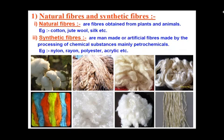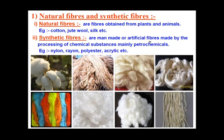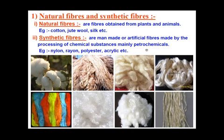In this chapter we have to study about synthetic fibers. Synthetic fibers are man-made or artificial fibers. When you compare them with natural fibers: natural fibers are obtained from plants and animals, while synthetic fibers are man-made — they are made in industries. They are not obtained from plants or animals. They are made by the processing of chemical substances, mainly petrochemicals. Examples of synthetic fibers are nylon, rayon, polyester, and acrylic.